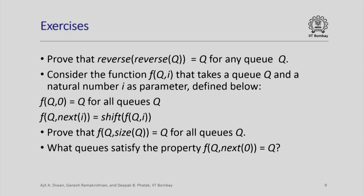The shift operation removes the first element of the queue and puts it at the end. If we apply this operation size(q) times we should get back the same queue as the original. Try to prove that f(q, size(q)) equals q for all queues q. Also, find out which queues satisfy the property that shifting once gives back the same queue — that is, f(q, 1) equals q. Not all queues will satisfy this, but you can find exactly which ones do. Try these exercises and we will meet next time. Thank you.